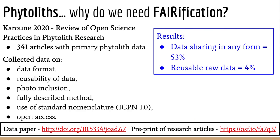This FAIR project stems from a study that I conducted last year to review open science practices in phytolith research. I looked at a set of 16 archaeological and paleoecological journals in a 10-year period — 2009 to 2018 — and picked out all phytolith articles that contain primary data. This was 341 articles. I collected data on data format, reusability of data, inclusion of photos for identification, the description of methods used, use of ICPN 1.0, and whether the articles were open access. I found that data sharing was 53% — any form of data — including articles with at least a data table in the text, supplementary files, or a repository. When refined to look at reusability — full raw data in an Excel spreadsheet, CSV file, or an open repository — this was only present in 4% of the articles.